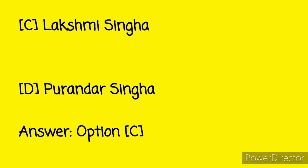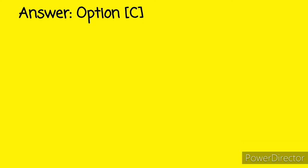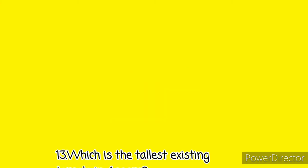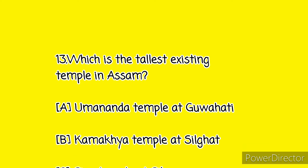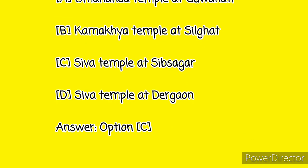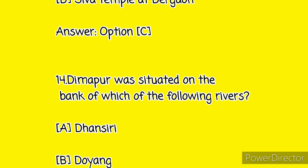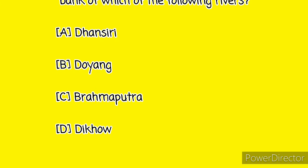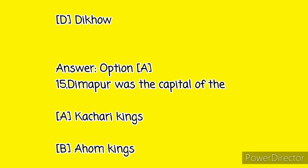And here the answer is Option C, that is Lakshmi Singha. Friends, I uploaded two more videos based on Assam history — if you want, go and check them out. If you like this video please click the like button and also subscribe to my channel. Next question, that is number thirteen: which is the tallest existing temple in Assam? Option A: Umananda temple at Guwahati, Option B: temple at Silghat, Option C: Shiva temple at Sivsagar, and Option D: Shiva temple at Dargaon. And here the answer is Option C. Question number fourteen: Dimapur was situated on the bank of which river? Option A: Dhansiri, Option B: Doyang, Option C: Brahmaputra, and Option D: Dikho. And here the answer is Option A.